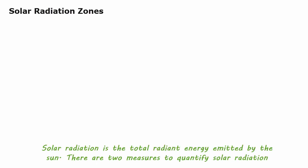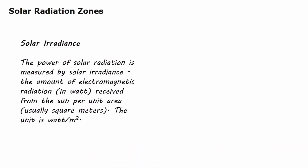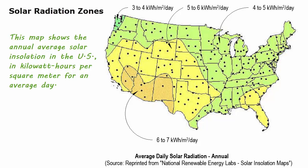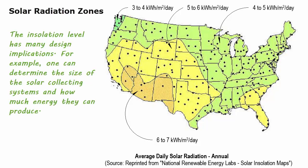Solar radiation is the total radiant energy emitted by the sun, and there are two measures to quantify it. Solar irradiance measures the power of solar radiation — the amount of electromagnetic radiation received from the sun per unit area — with units of watts per meter squared. When solar radiation is accumulated over time, it is called solar insolation, a cumulative energy measured over a period of time per unit area, with units of watt-hours per meter squared. A map showing annual average solar insolation in the U.S. in kilowatt-hours per meter squared for an average day illustrates design implications, such as determining the size of solar collecting systems and how much energy they can produce.